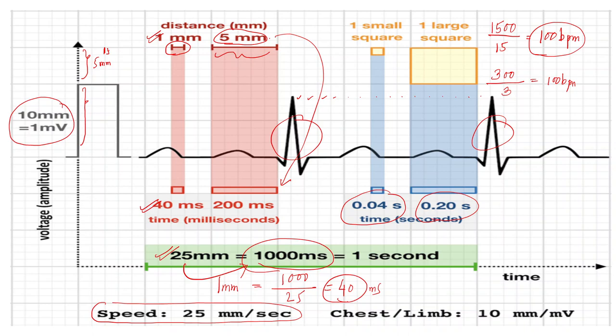Now that is the formula. How do we derive it? Because in certain ECGs the speed will be different — maybe 50 mm per second or sometimes 12.5 mm per second. Though 25 mm per second is the standard reference value used in most ECGs, sometimes we may change the speed for certain reasons that will be discussed later. So we need to understand how to derive this formula. Again: 25 mm equals 1000 milliseconds equals 1 second.